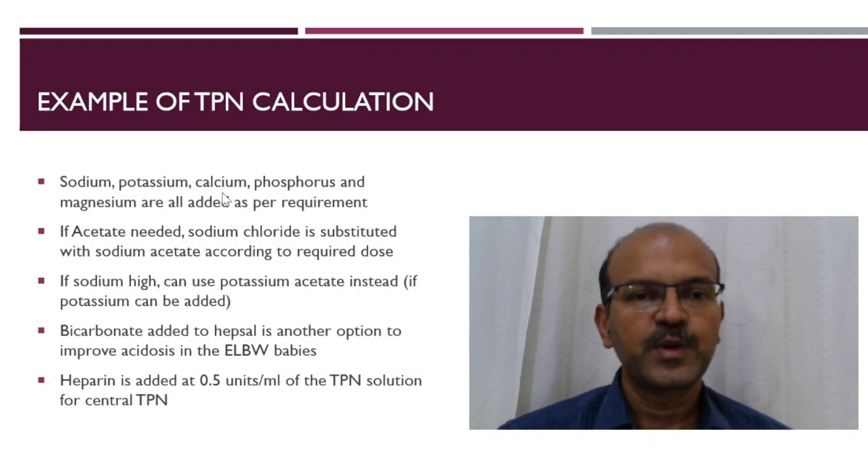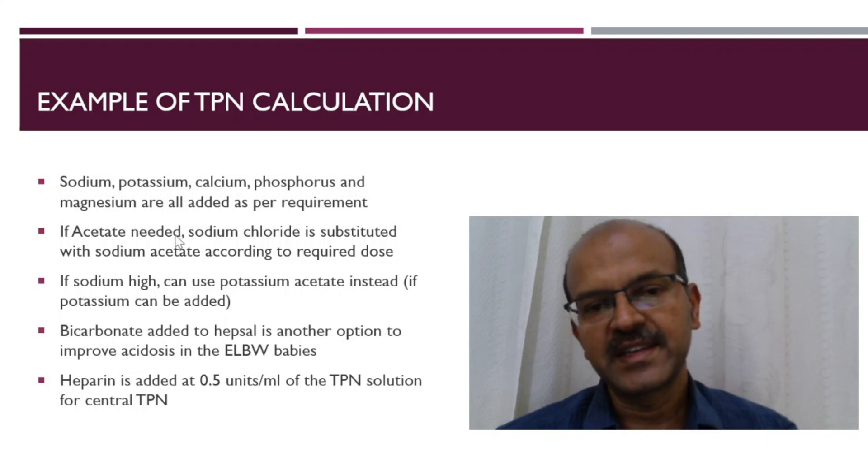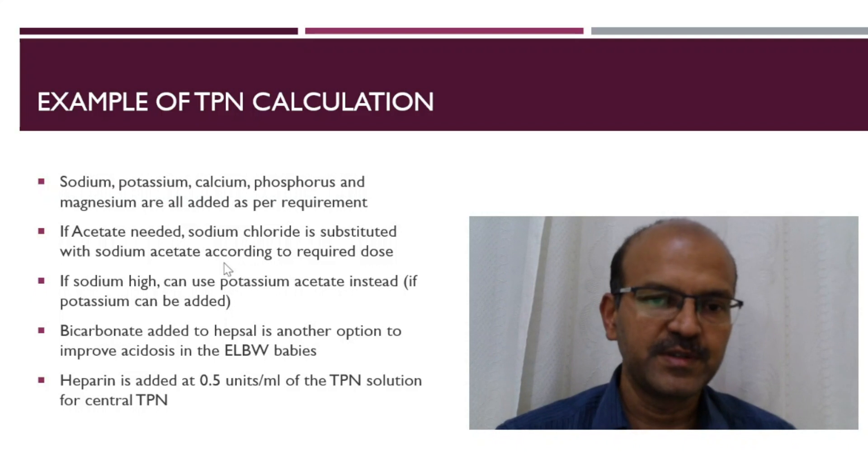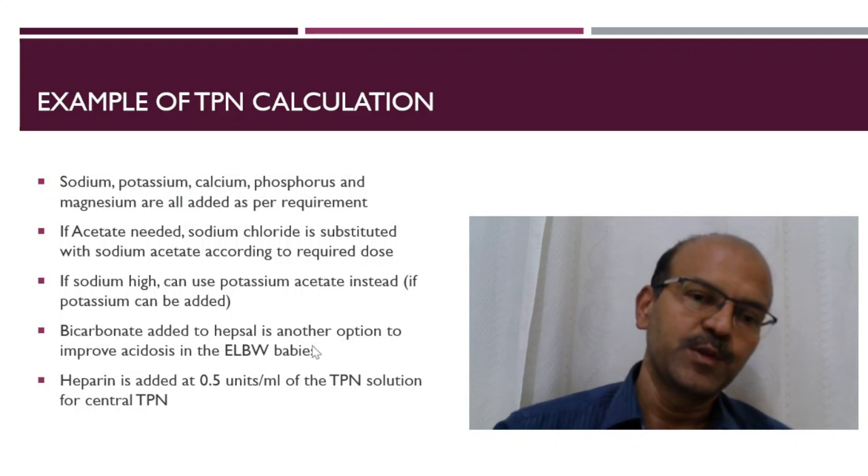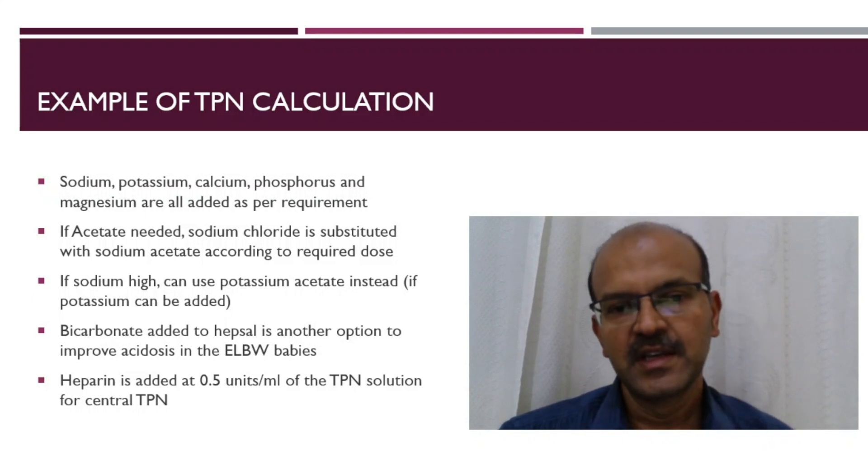Sodium, potassium, calcium, and phosphorous are all added as per requirement. If acetate is needed, sodium chloride is substituted with sodium acetate. If sodium is high, we can use potassium acetate instead. Bicarbonate is added to Hepsal in the UAC if we need to correct the acidosis more. You can have half-strength or weak solution or strong solution.